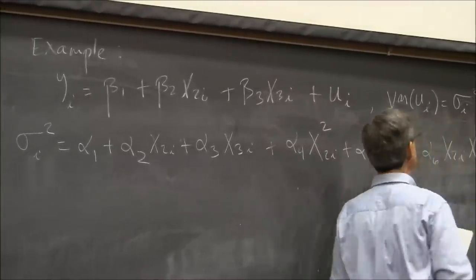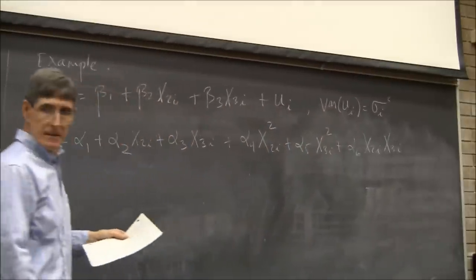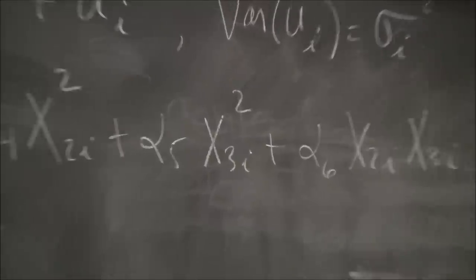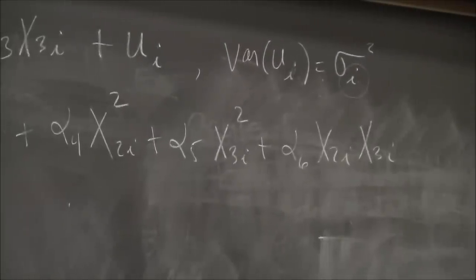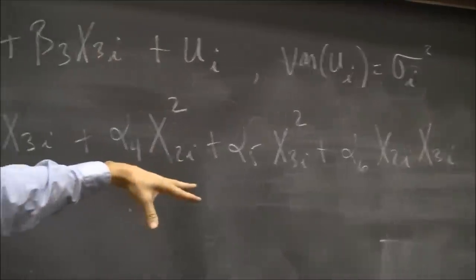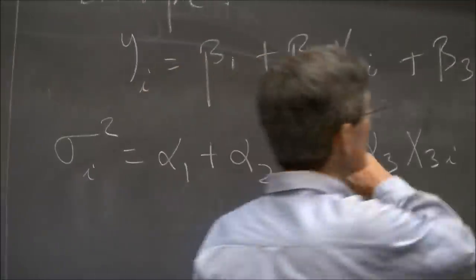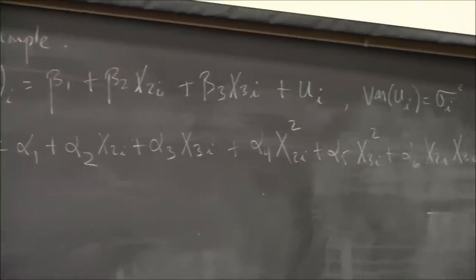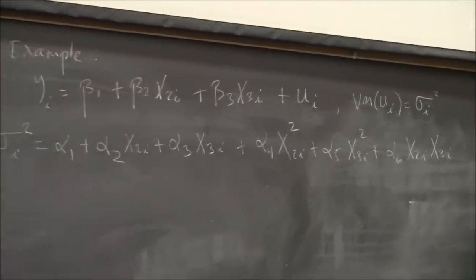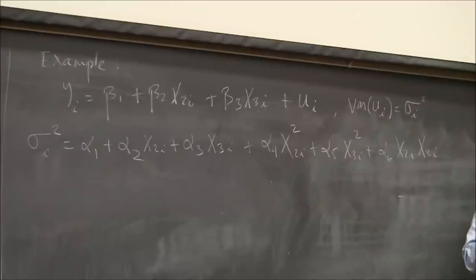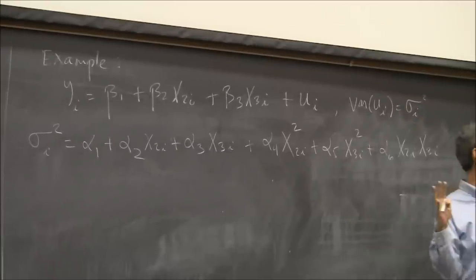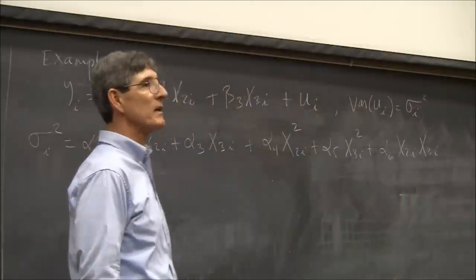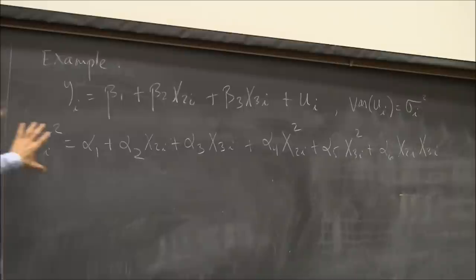You take the x's that are in your model — this is why we used z's before, because they're not the same as all the x's — but you just take your x's, take all their squares, and take all their inner products. If you had three x's, there'd be x₂x₃, x₂x₄, x₃x₄, and so on — all the unique cross products. So this is the model.